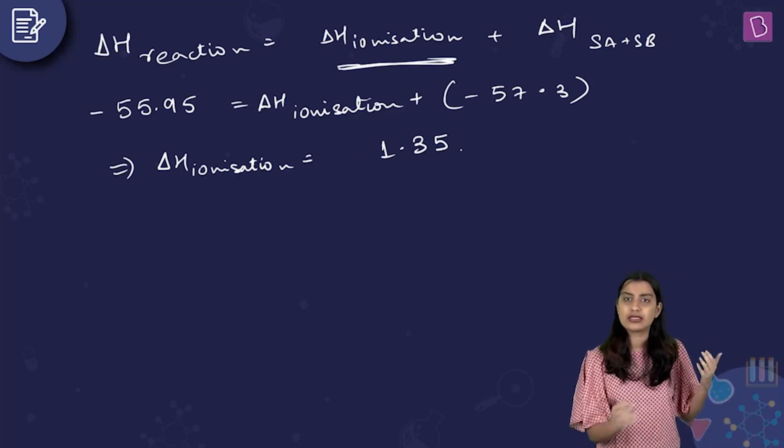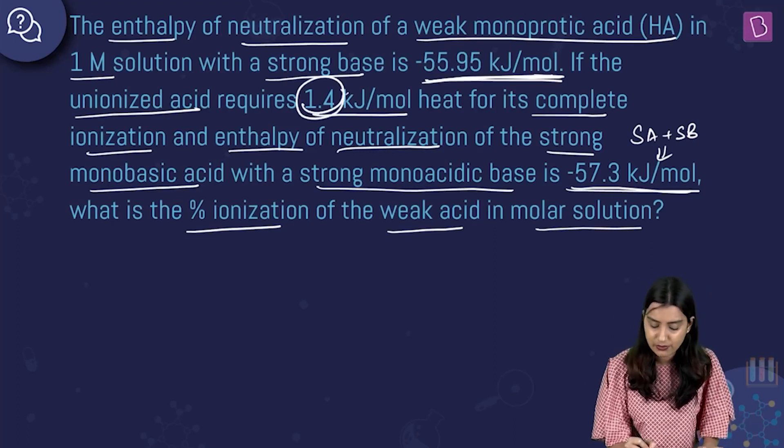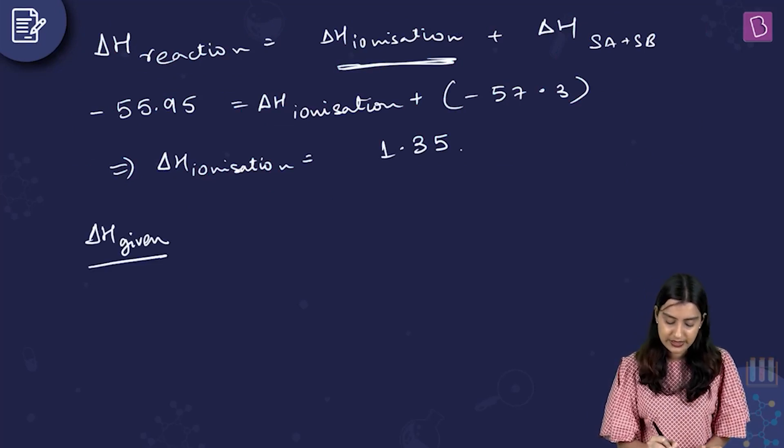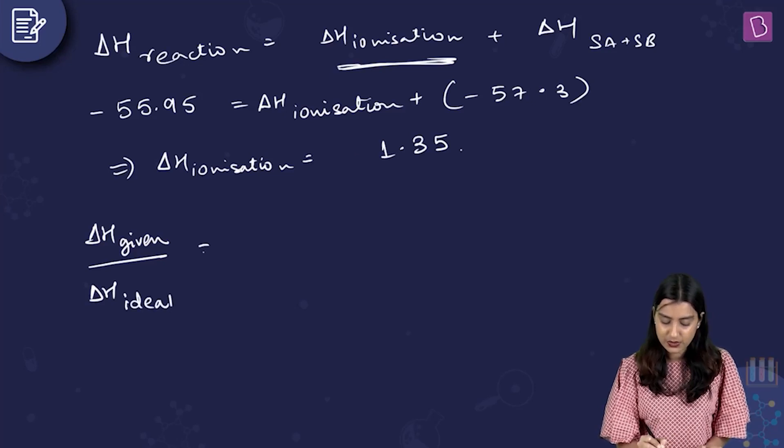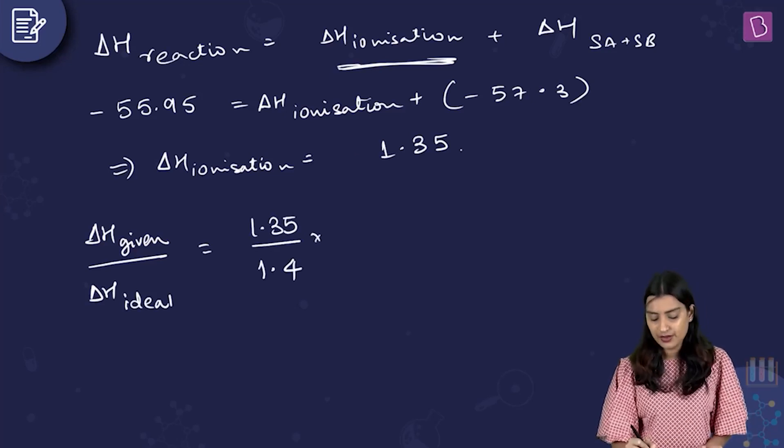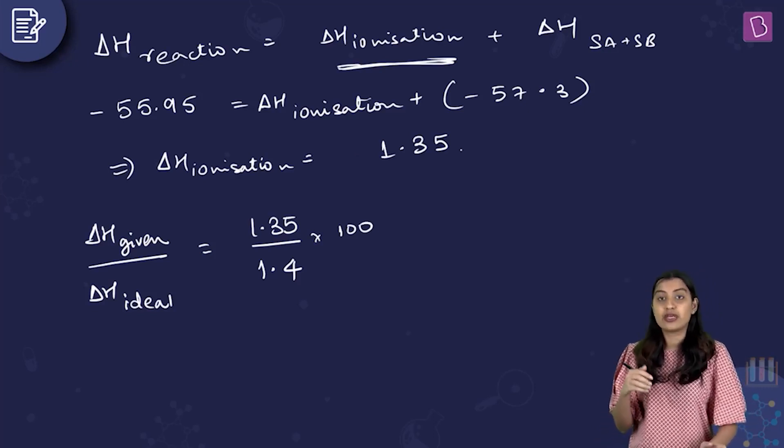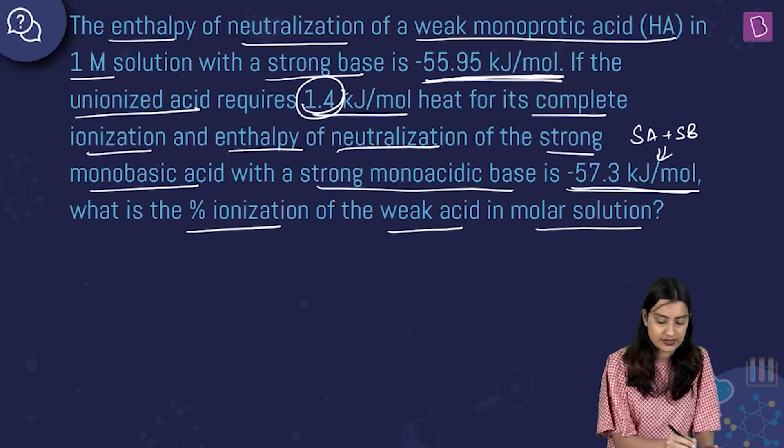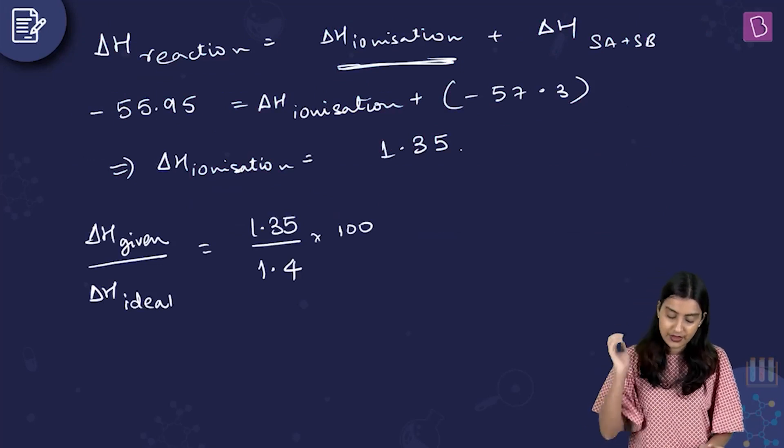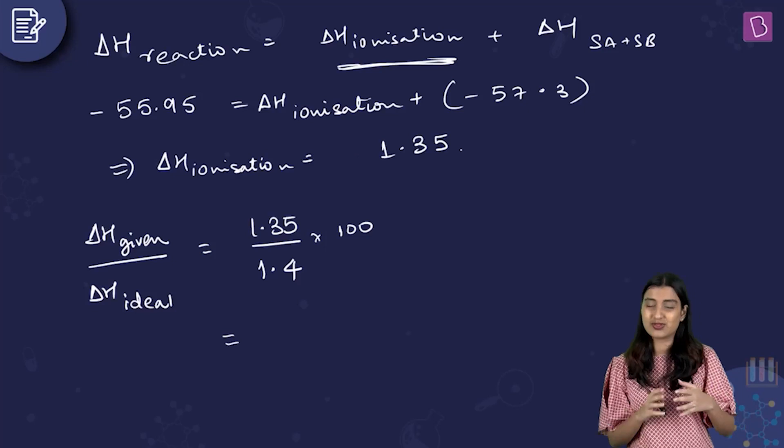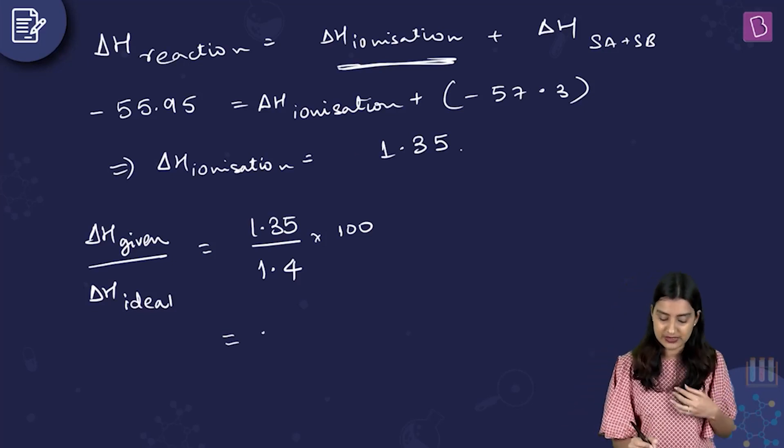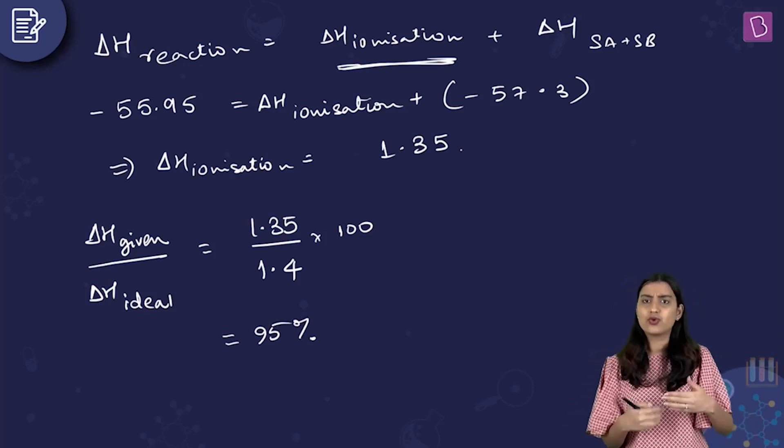I think you should only care about the magnitude because here also they have only given you magnitude, 1.4 kJ. Here you have delta H of given case divided by delta H of ideal case. What is this? It is 1.35 by 1.4. Multiply it by 100. 1.4 is for 0% ionization - is for unionized acid.